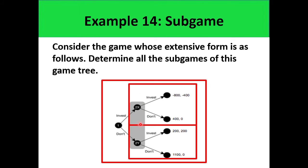In this sub-game, it is player 2 who makes the decision. Player 2 either gets negative 400 or 0. Of course, if you are player 2, you would rather choose don't invest. Because investing will give negative 400 as compared to getting 0 if you choose not to invest. So player 2 will not choose to invest, and we can erase this portion of the tree.